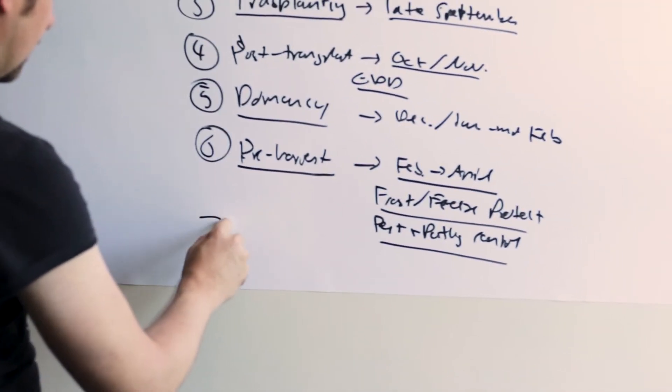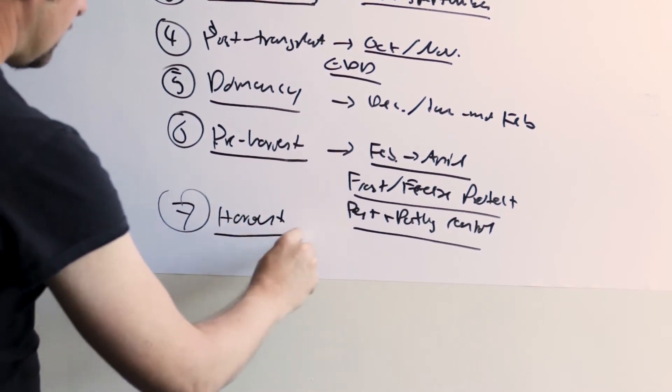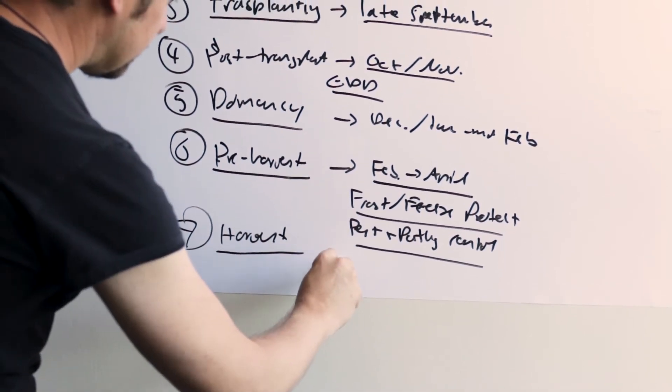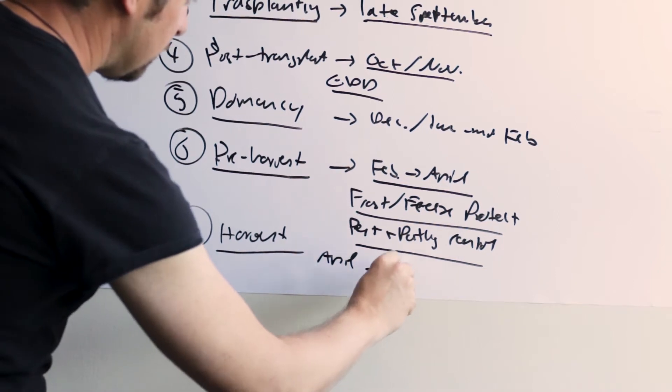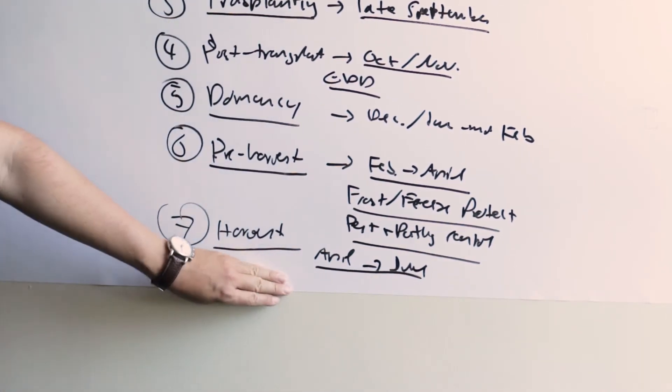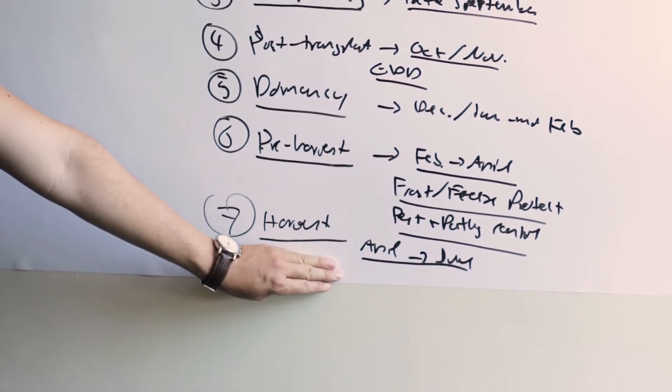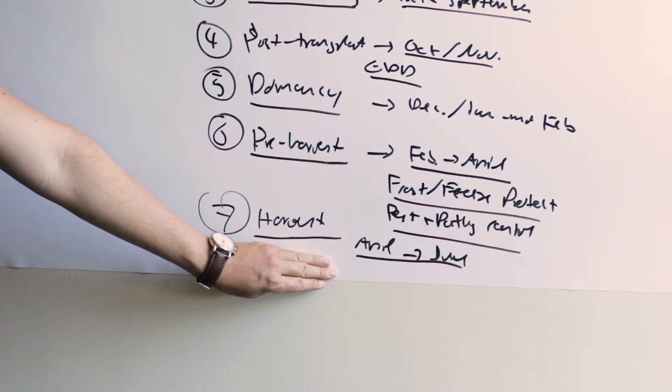And then the seventh stage is of course harvest, which then usually starts in April and goes all the way to June. During harvest, if you have early varieties, please count on at least going twice a week into the field to harvest.